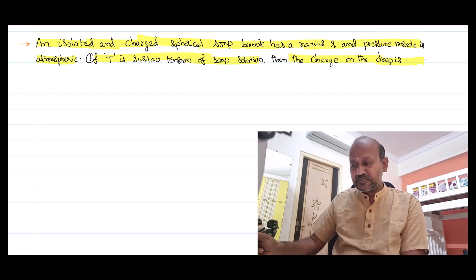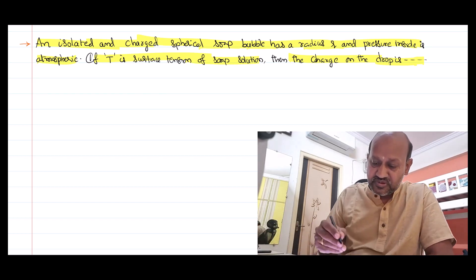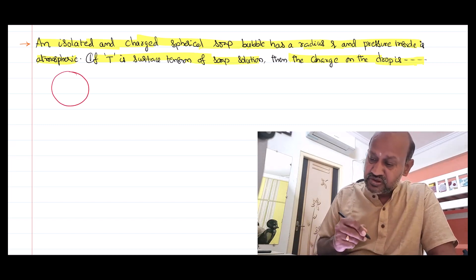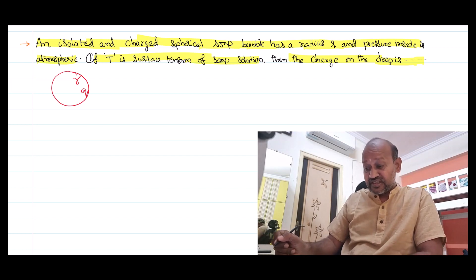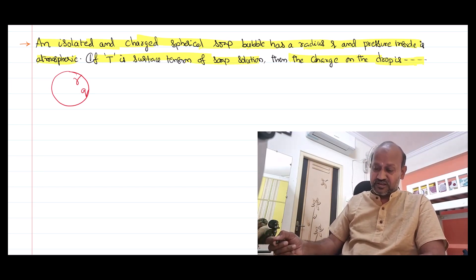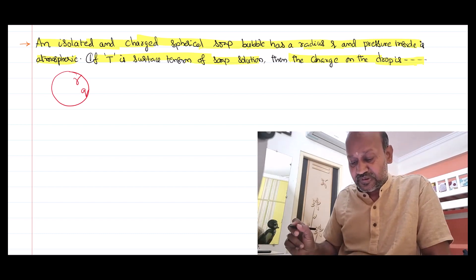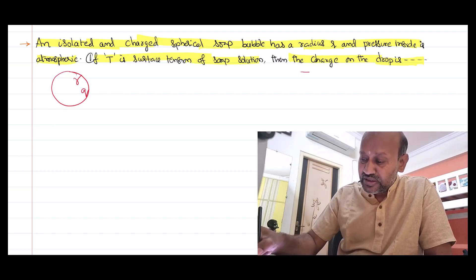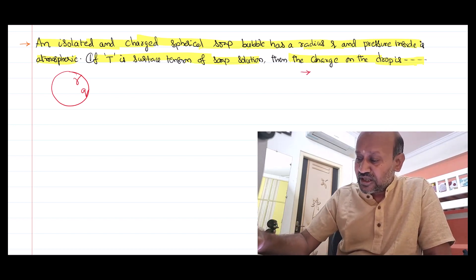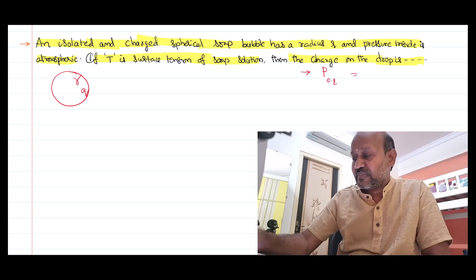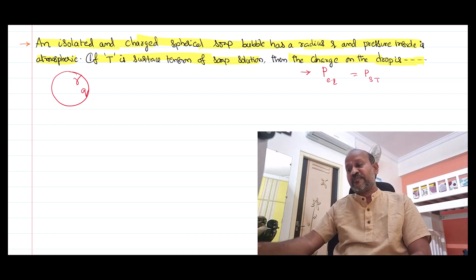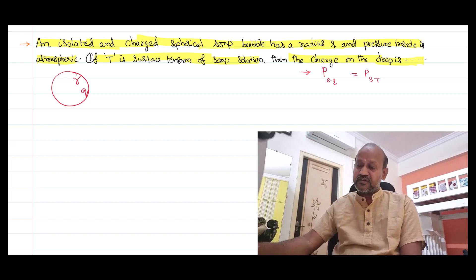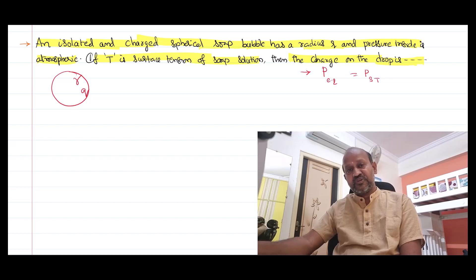There are two pressures acting on the charged drop. The drop has some radius R, and there is a charge Q inside it because of which some electric intensity is developed, and due to that, some electric pressure is developed. There is also some excess pressure due to the surface tension. When these two pressures are equal, the bubble is balanced. By equating them, we can find the charge on the soap bubble.